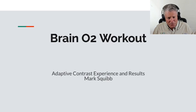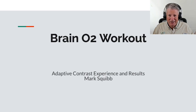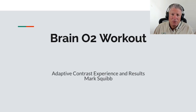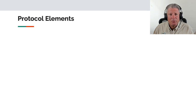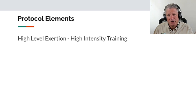This presentation goes through my Brain O2 workout. The goal is to explain what adaptive contrast really does and to show results both in terms of real-time brain energy as well as results with other people. We do what we call a Brain O2 protocol — the elements include high-level exertion and high-intensity interval training.